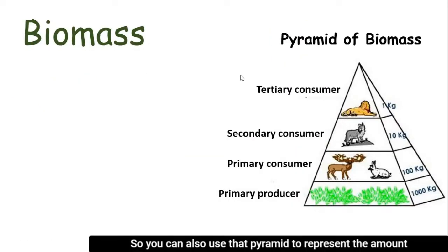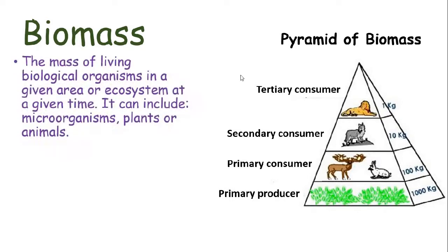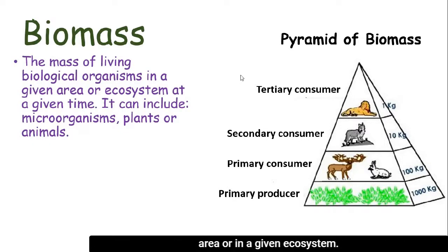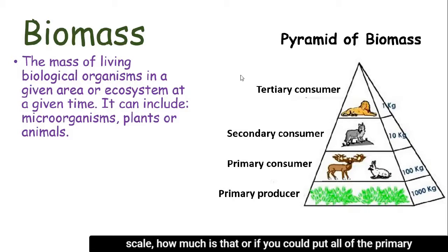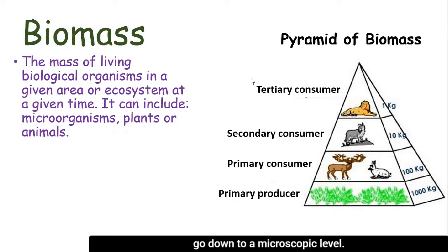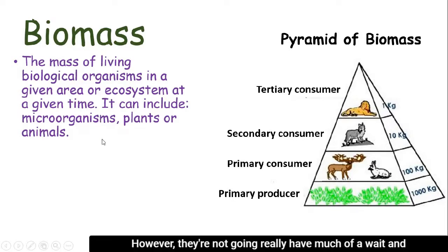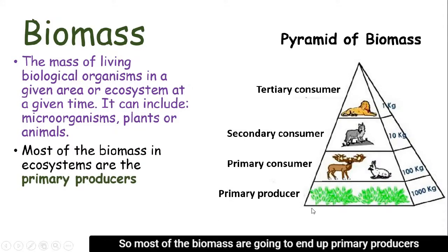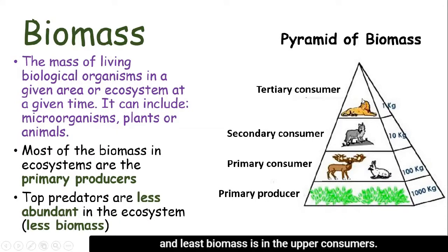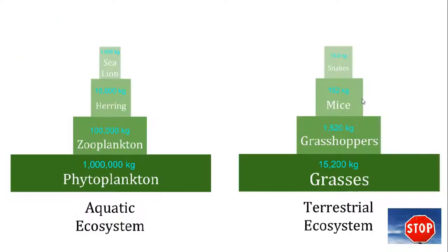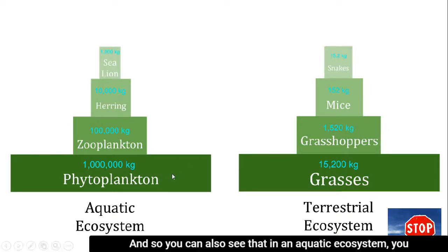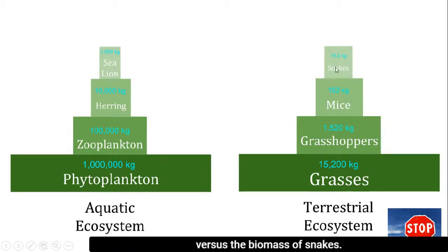You can also use that pyramid to represent the amount of biomass of the different trophic levels in an ecosystem. Biomass is the mass of living organisms in a given area or ecosystem. So if you could weigh all of the primary producers on a giant scale, or put all of the primary consumers in a particular ecosystem on a giant scale — that's biomass. Most of the biomass is in the primary producers, and the least biomass is in the upper consumers. There are far fewer lions relative to so much grass. The same can be seen in an aquatic ecosystem — so much phytoplankton relative to a sea lion — versus a terrestrial ecosystem with grass and snakes.